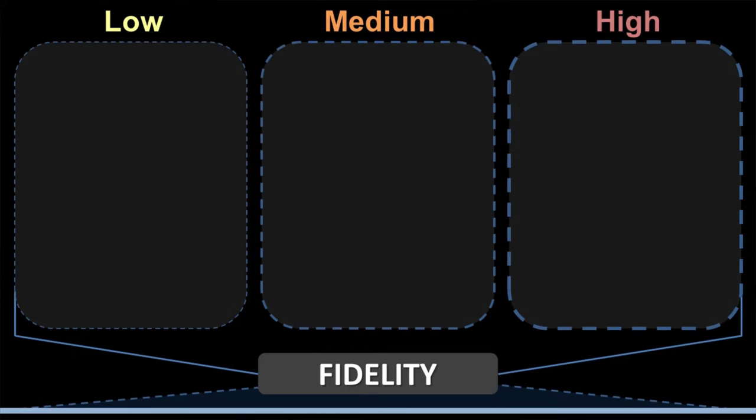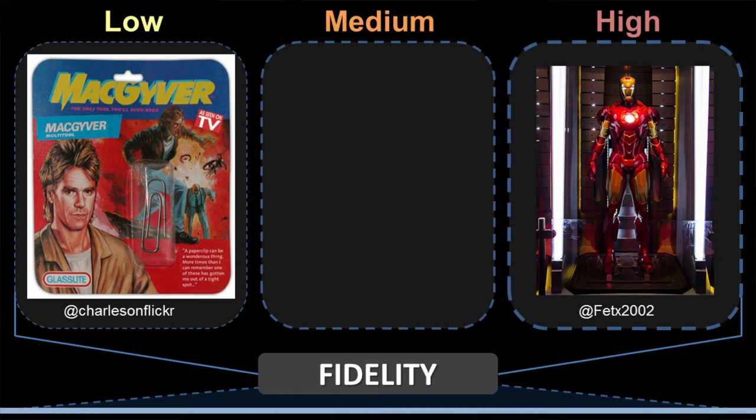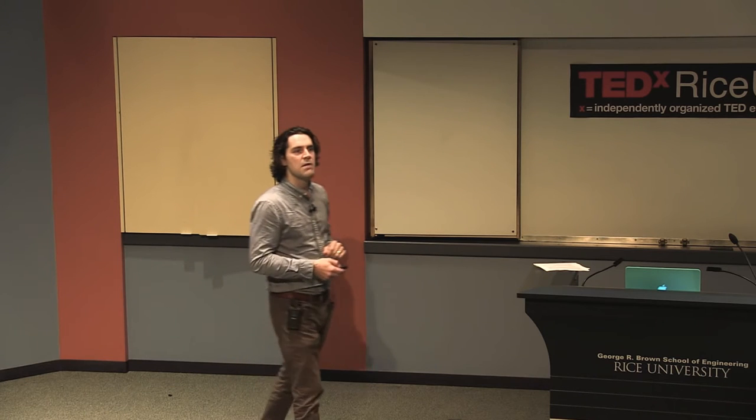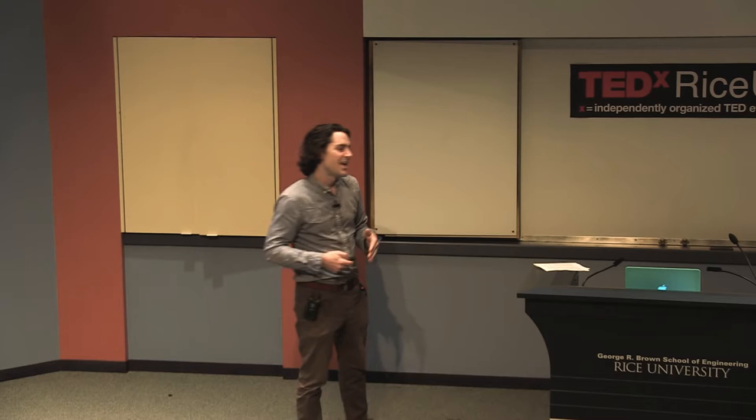Our first hero for low-fidelity prototyping is MacGyver. MacGyver got himself into preposterous situations and got out of them just as easily with a multi-tool — not a sonic screwdriver, just a paperclip. He is the hero for low-fidelity prototyping. At high-fidelity prototyping, our hero is Iron Man — Tony Stark. And at medium-fidelity, our heroes are people who sell things on Etsy: they make craft objects with their hands, nowhere as crafty as MacGyver, but certainly nowhere as polished as Tony Stark.